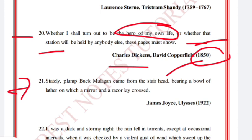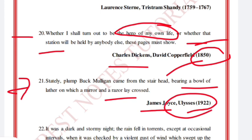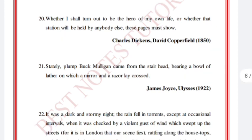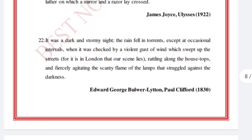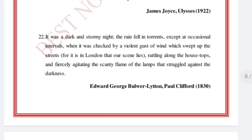'A stately, plump Buck Mulligan came from the stairhead, bearing a bowl of lather on which a mirror and a razor lay crossed.' James Joyce, Ulysses, 1922 — a very important work.